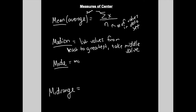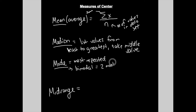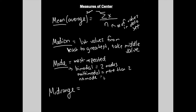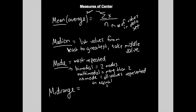The mode is the most repeated data value. You can have bimodal data, which means two modes, multimodal, which means more than two, or no mode, which means all data values are represented an equal number of times.